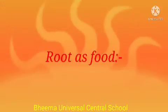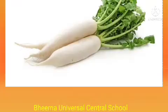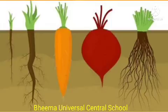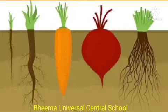First one is root as food. Tell me some names of roots that we eat. Very good — carrot, beetroot and radish. Roots anchor the plant to the soil and also absorb water and minerals from the soil for the entire plant. Roots get swollen when extra food is stored in them. We eat the food stored by plants in the roots.